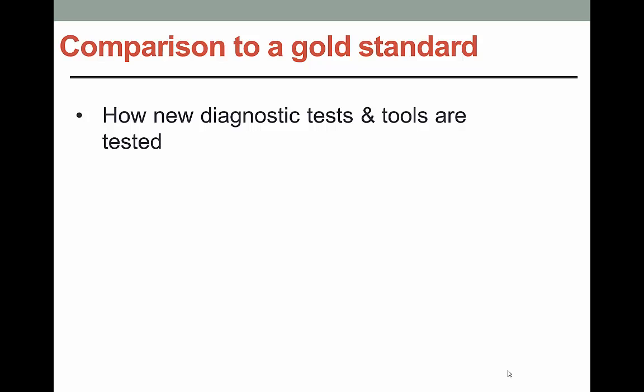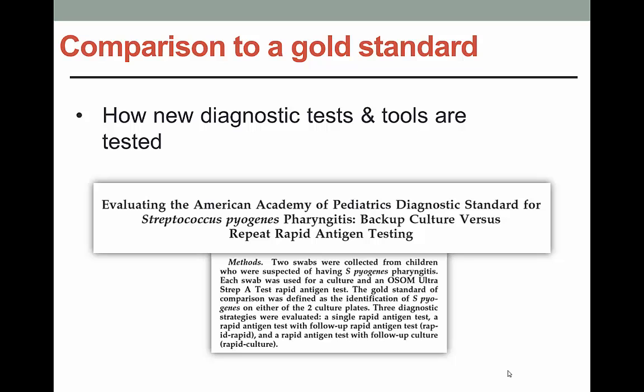A prospective blind comparison to a gold standard is how many new diagnostic tools are tested. It compares the new tool to what is currently considered the gold standard — a controlled trial that looks at patients with varying degrees of an illness and administers both the new and the gold standard diagnostic tests. An example is finding easier, cheaper, and faster methods to diagnose strep throat in children.